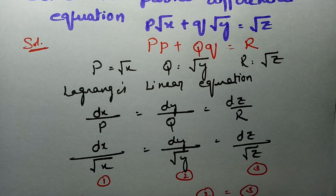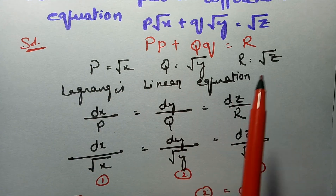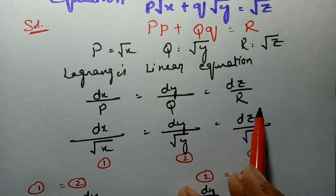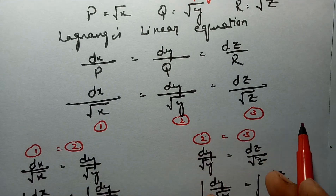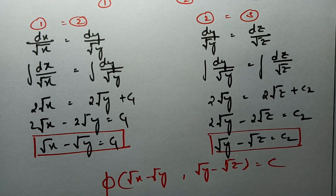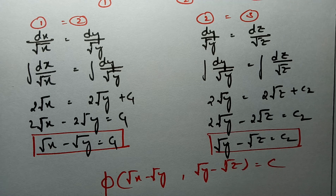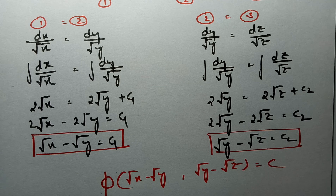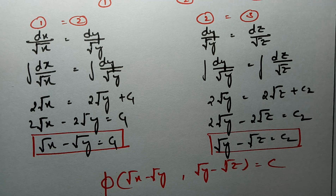This is very easy and very important. We pick P, Q, R values, transform the equation into the auxiliary form, substitute values, equate pairs of equations to get two solutions, and write the general solution as φ(√x − √y, √y − √z) = 0. Look forward to practicing thoroughly, and check my upcoming videos on using multipliers for Lagrange's linear differential equations. If you like this video, please like, subscribe, comment, and share. Thank you so much.